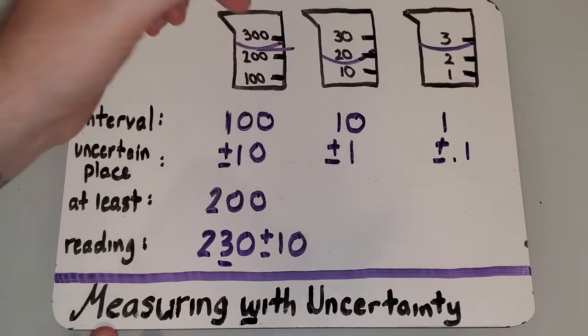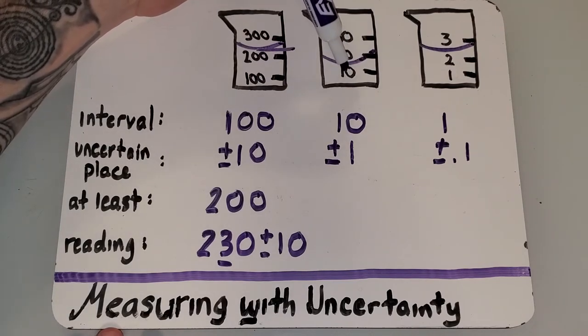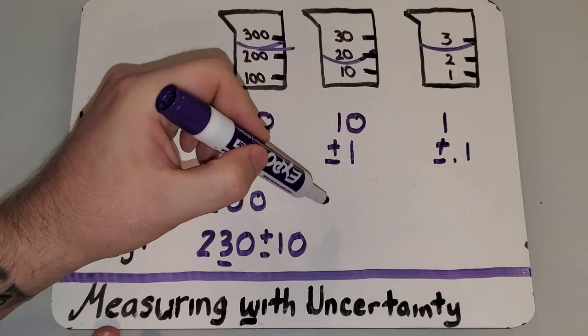Let's take a look at this one. This is at least 10. It's above the 10 line, but below the 20 line. It's at least 10.